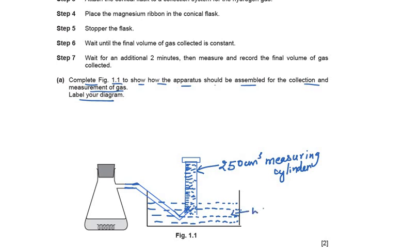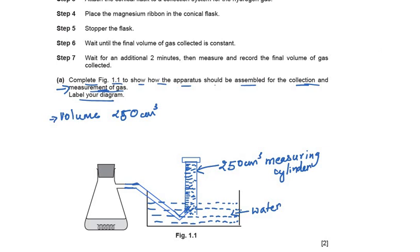Label the water so it is known that we are collecting hydrogen gas over water. We must mention the volume of the measuring cylinder — 250 cm³ — because the question requires assembling apparatus for the collection and measurement of gas. We need a big enough measuring cylinder to collect all the gas. Wherever needed, the volume and unit should always be specified.